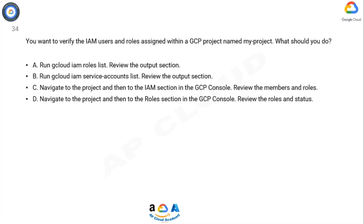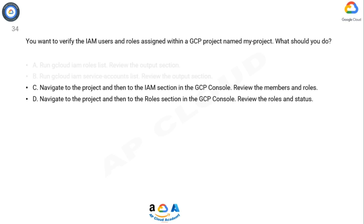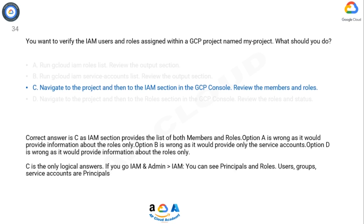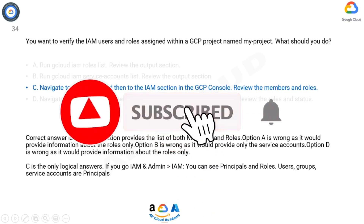Option A is wrong as it would provide information about the roles only. Option B is wrong as it would provide only the service accounts. Option D is wrong as it would provide information about the roles only. The correct answer is C, as the IAM section provides the list of both members and roles. If you go to IAM and Admin > IAM, you can see principals and roles — users, groups, service accounts, or principals.